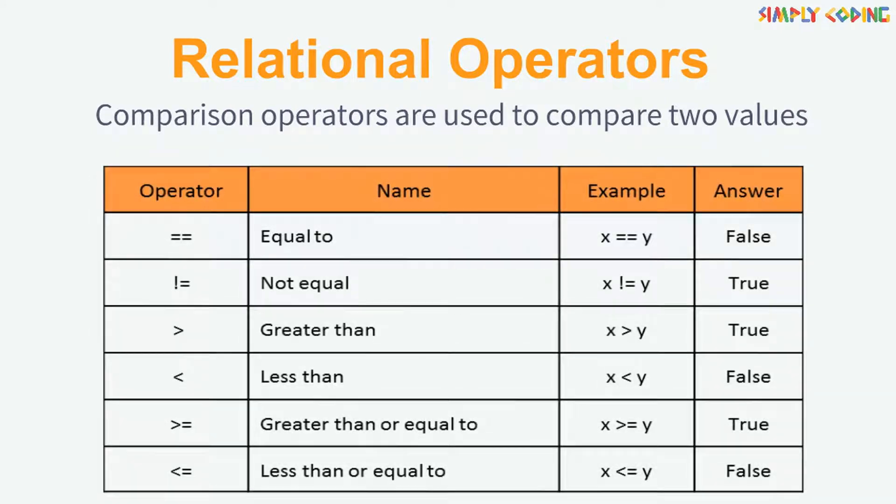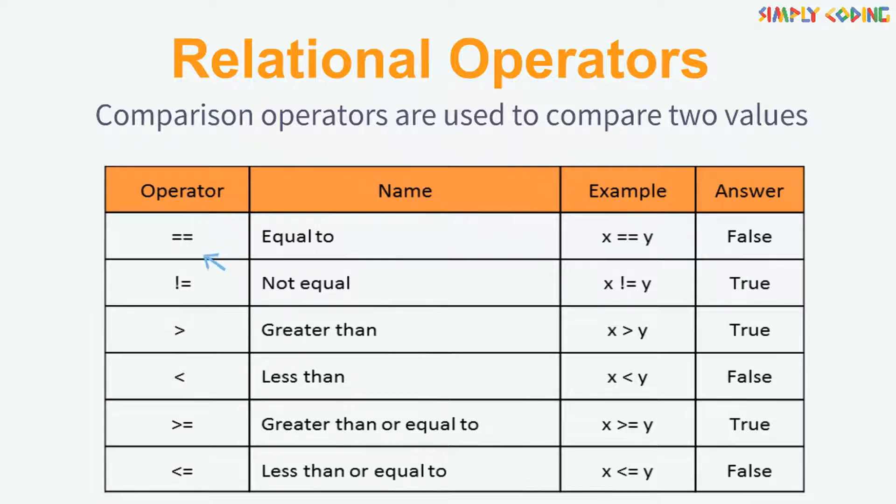Now, let's take a look at relational operators. There are 6 relational operators which are used to compare numbers or characters. These operators are equal to, not equal to, greater than, less than, greater than and equal to, and less than and equal to. Let's see this in some examples.